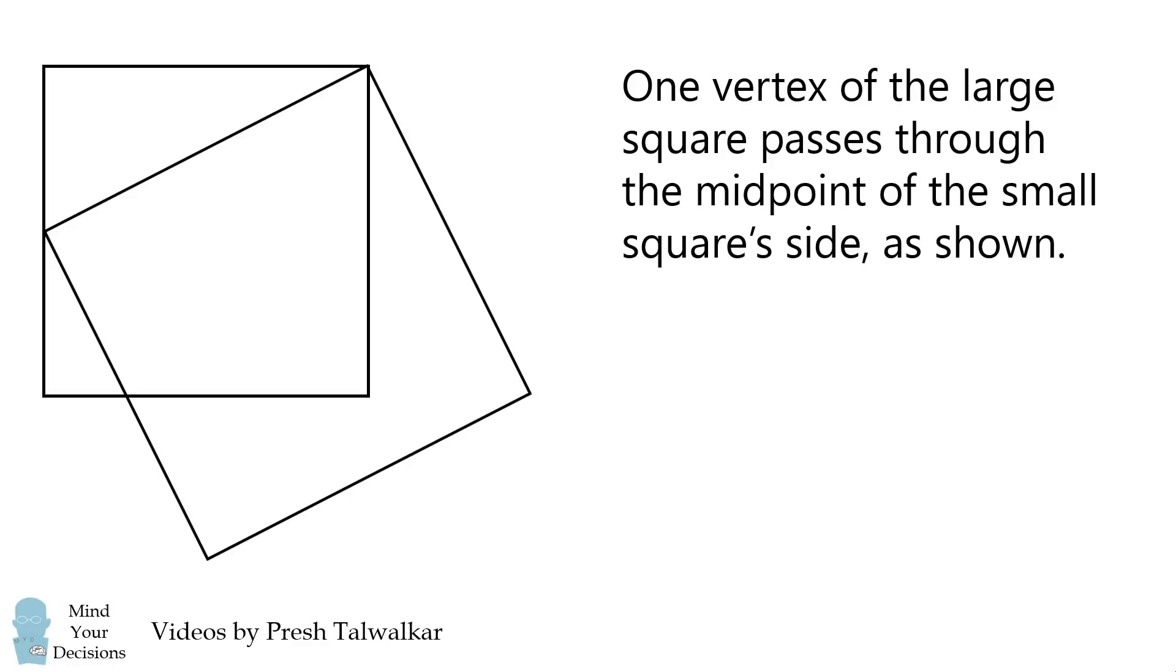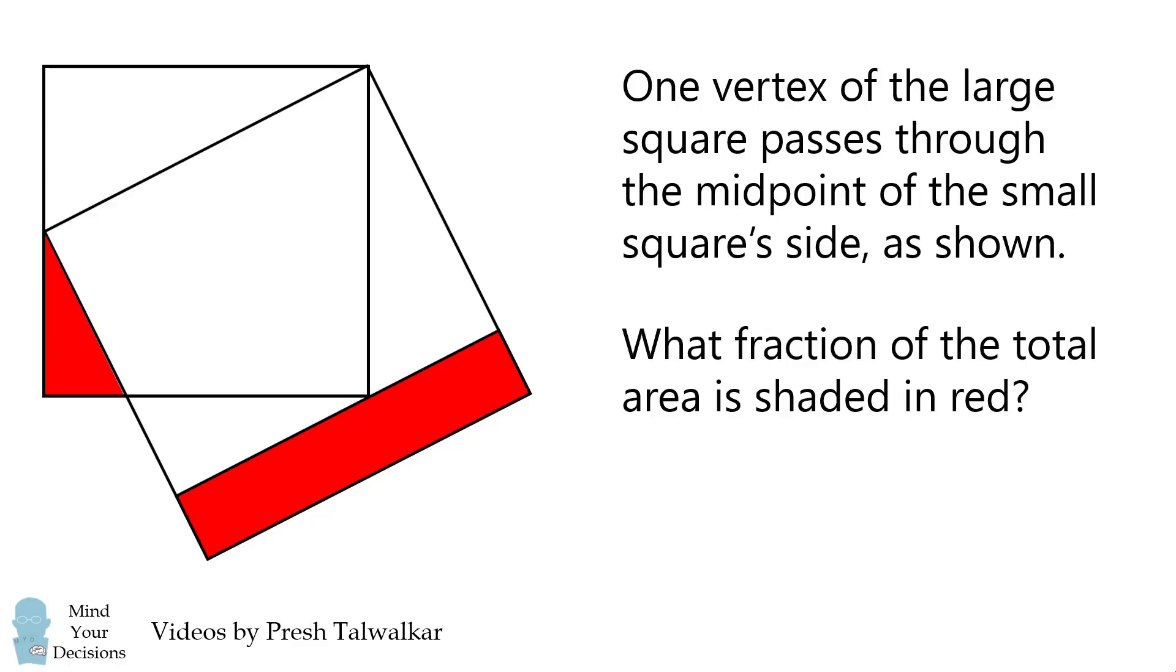Start with a small square and then draw a large square so that one vertex of the large square passes through the midpoint of the small square side as shown in the diagram. Now shade this triangle in red and shade this rectangle in red. What fraction of the total area is shaded in red?